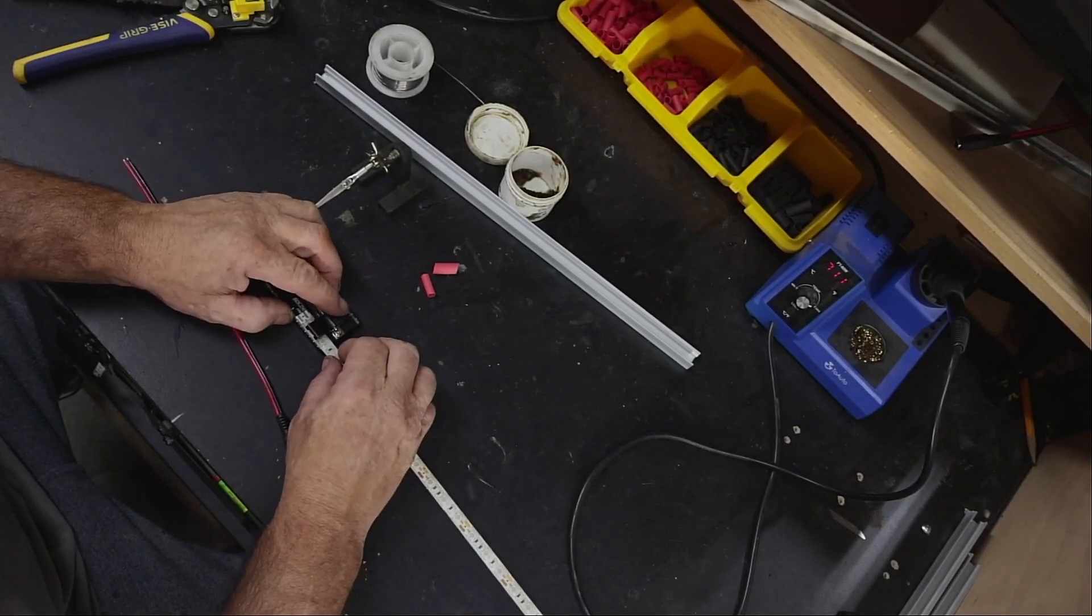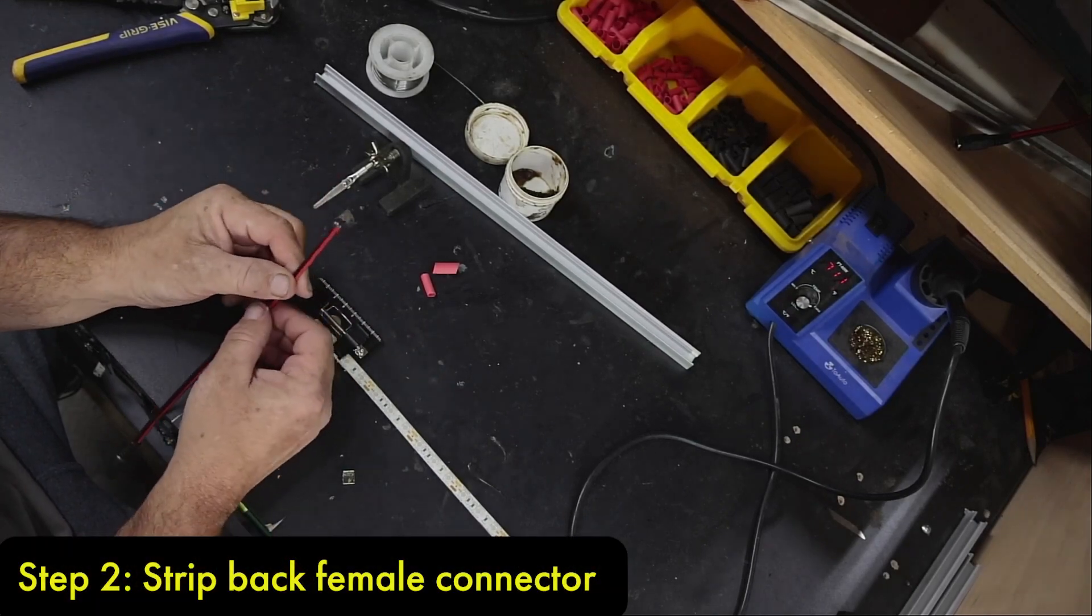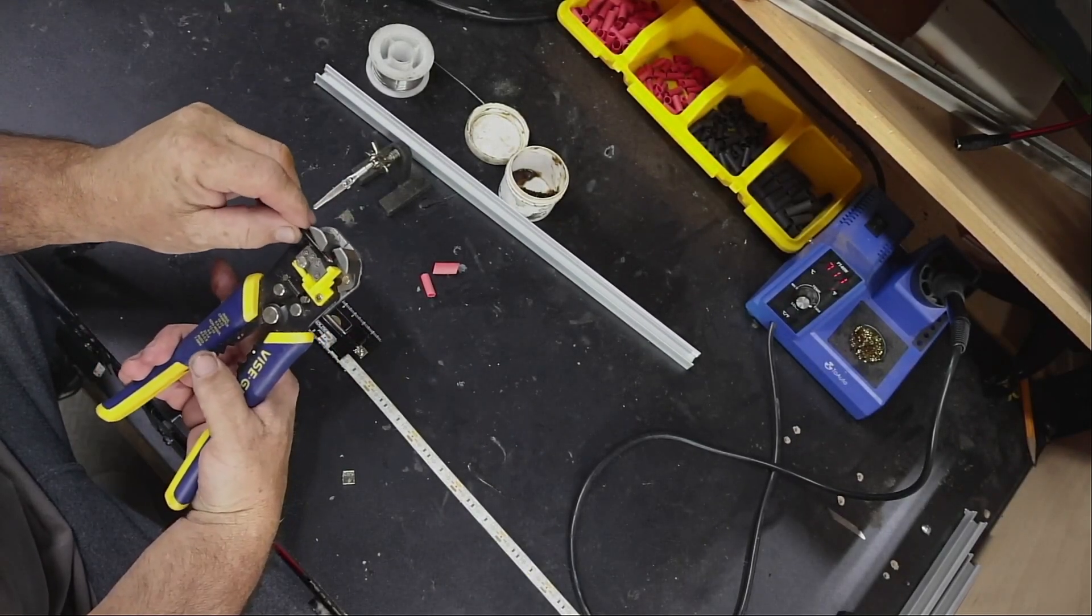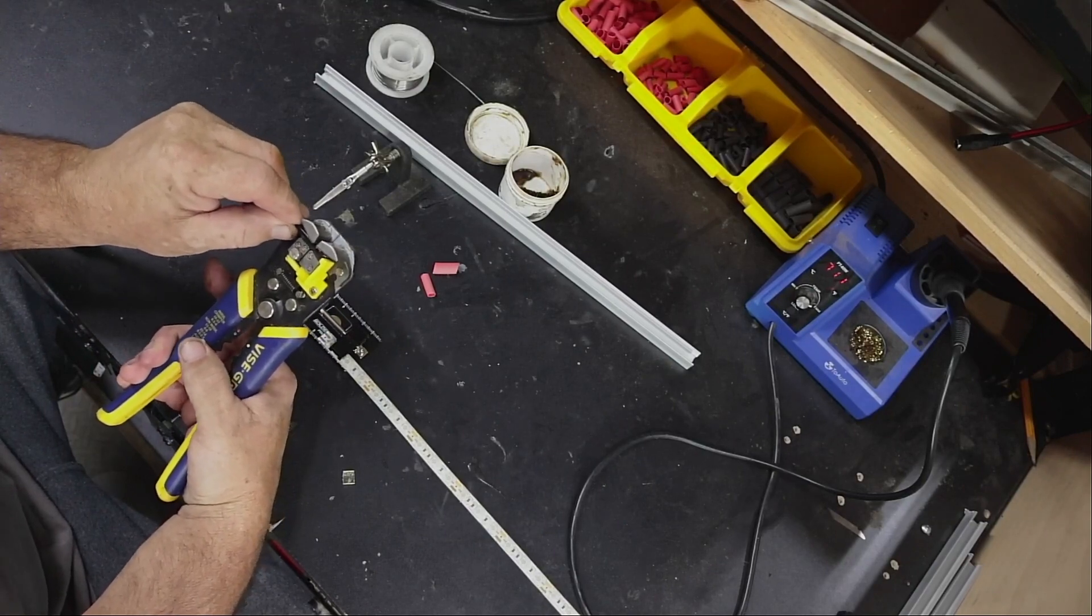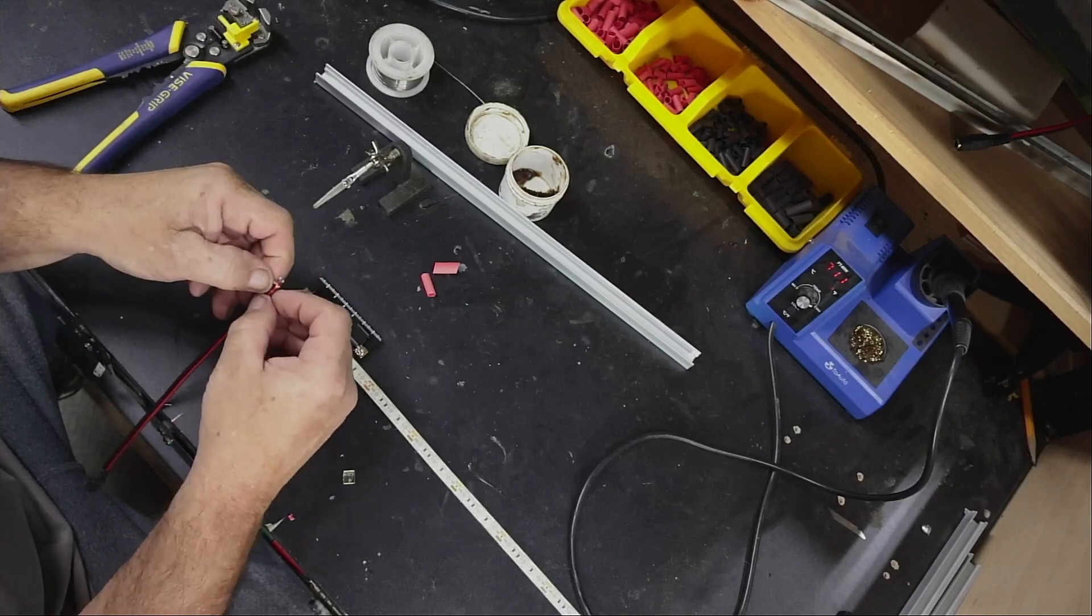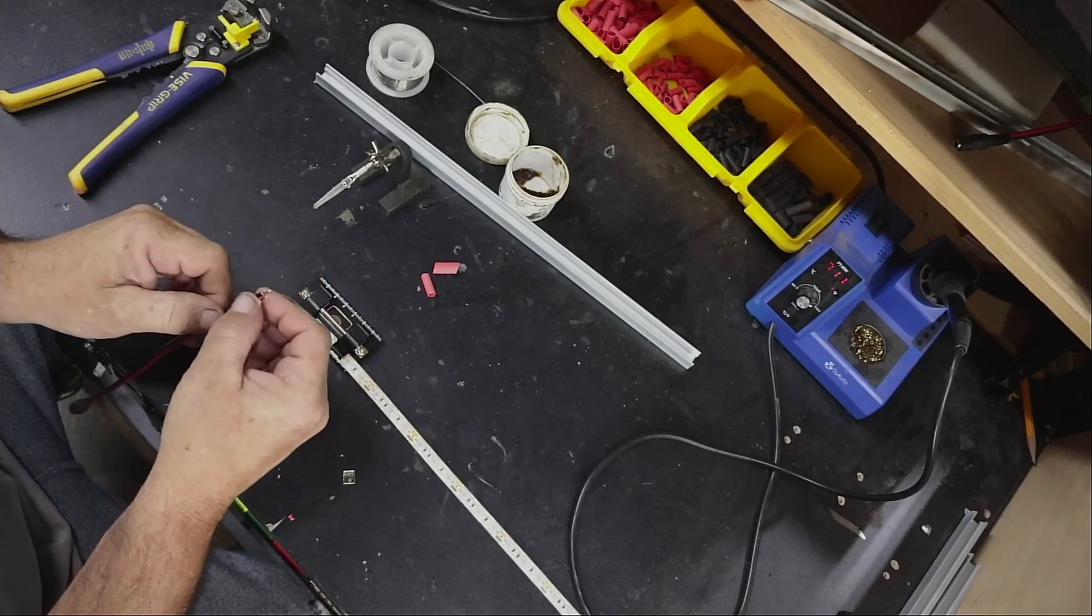Then I'll take my female connector, take my wire strippers, and strip it back about maybe a quarter of an inch so it looks just like that. Split the wires a little bit - that will help you with your soldering later.